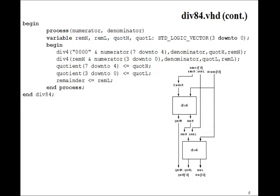So to get our 8-bit one, we need to just call this twice according to this diagram we have here. So the process will be numerator and denominator in the sensitivity list. We'll have variables for remainder high, remainder low, quotient high, quotient low. Those will all be 4 bits. And then we just call div4 twice. The first div4 will implement this one, where we want 0 numerator high coming in for the numerator. So we have 0, 0, 0, 0 concatenated with numerator 7 down to 4. That will be this one. Denominator will be the denominator coming in here. And the outputs will be quotient high and remainder high.